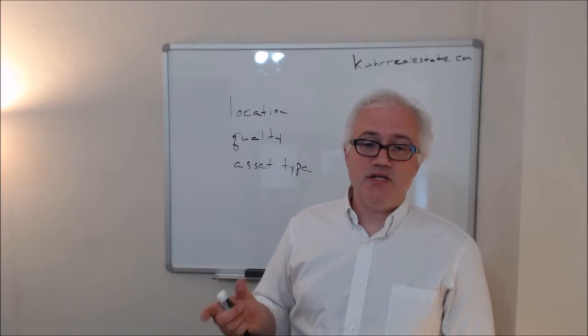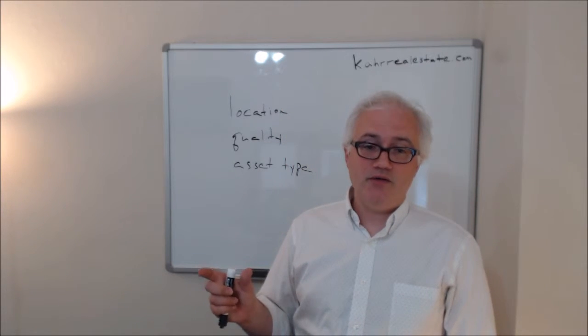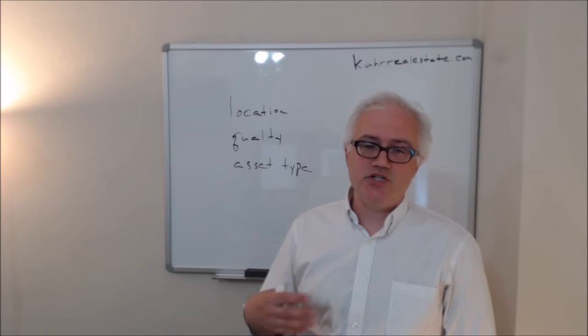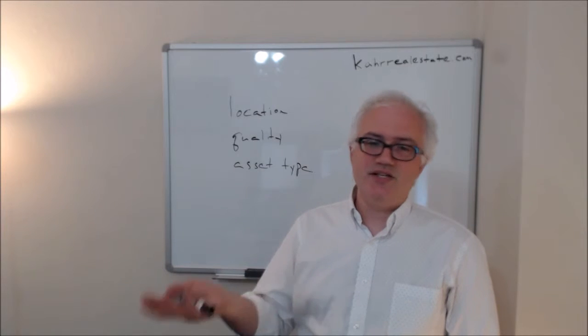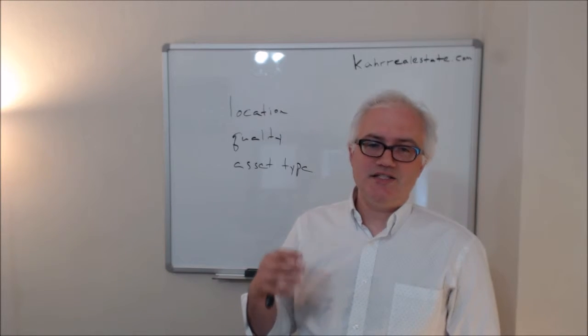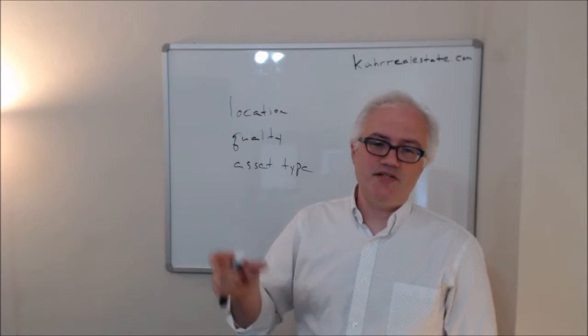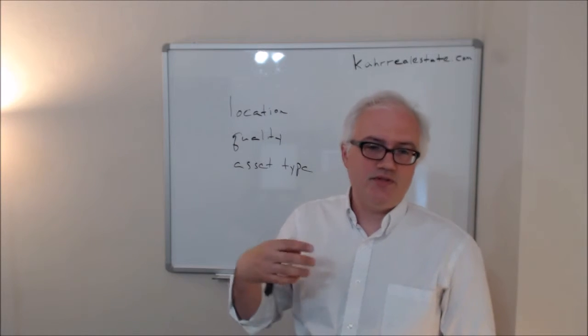And in weak economies, we usually see a flight basically to quality. Essentially, when the economy gets rough, people say, now that there are five tenants and six spaces, let's move into the five best spaces and leave the worst space empty. That's the basic idea.